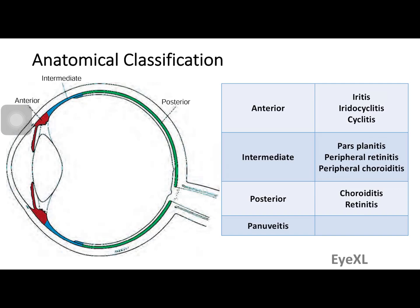Intermediate uveitis involves the pars plana — the more posterior part of the ciliary body — along with the peripheral retina and peripheral choroid, sometimes called pars planitis. Posterior uveitis mainly deals with the choroid and the retina closer to the posterior pole. Pan uveitis refers to involvement of all layers.